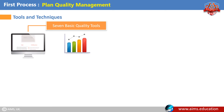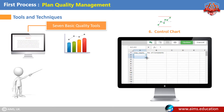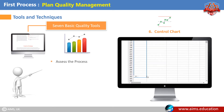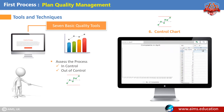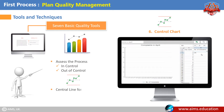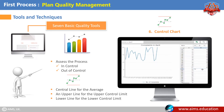The sixth basic quality tool — Control Chart: A graphical display of results over time of a process, used to assess whether the process is in control or out of control. A control chart always has a central line for the average, an upper line for the upper control limit, and a lower line for the lower control limit. These lines are determined from historical data.